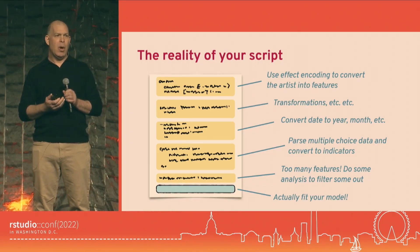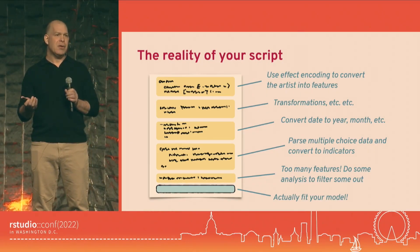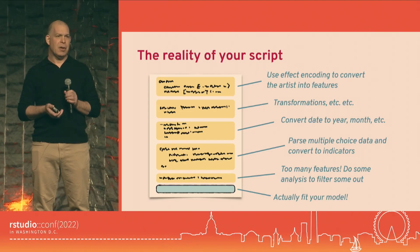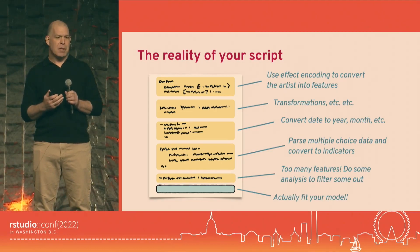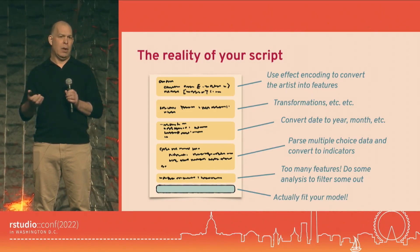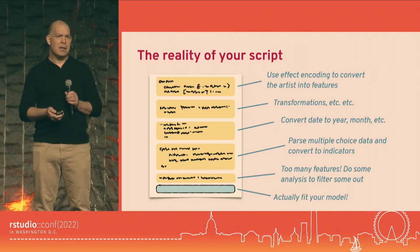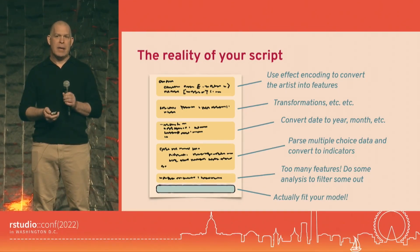At some point we have way too many features, so we might think about doing some feature selection. There's this big script we have to work through before we get to that actual one line of modeling. This is the reality of things, and it's not great — it's something you'll have to deal with every time you get a new dataset.